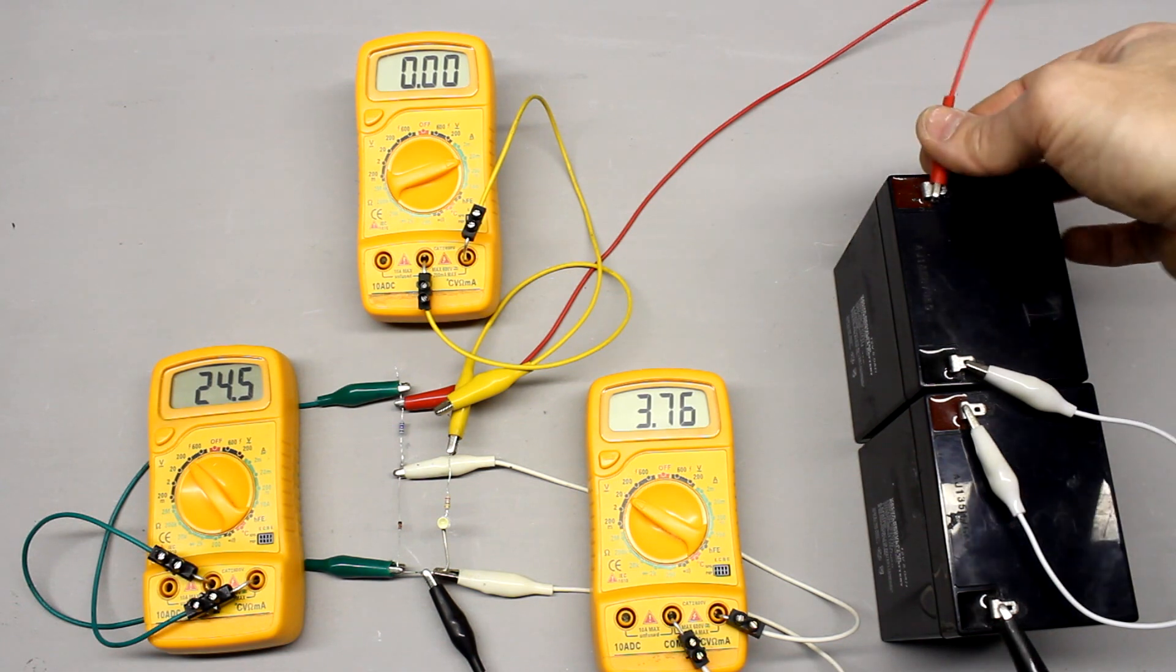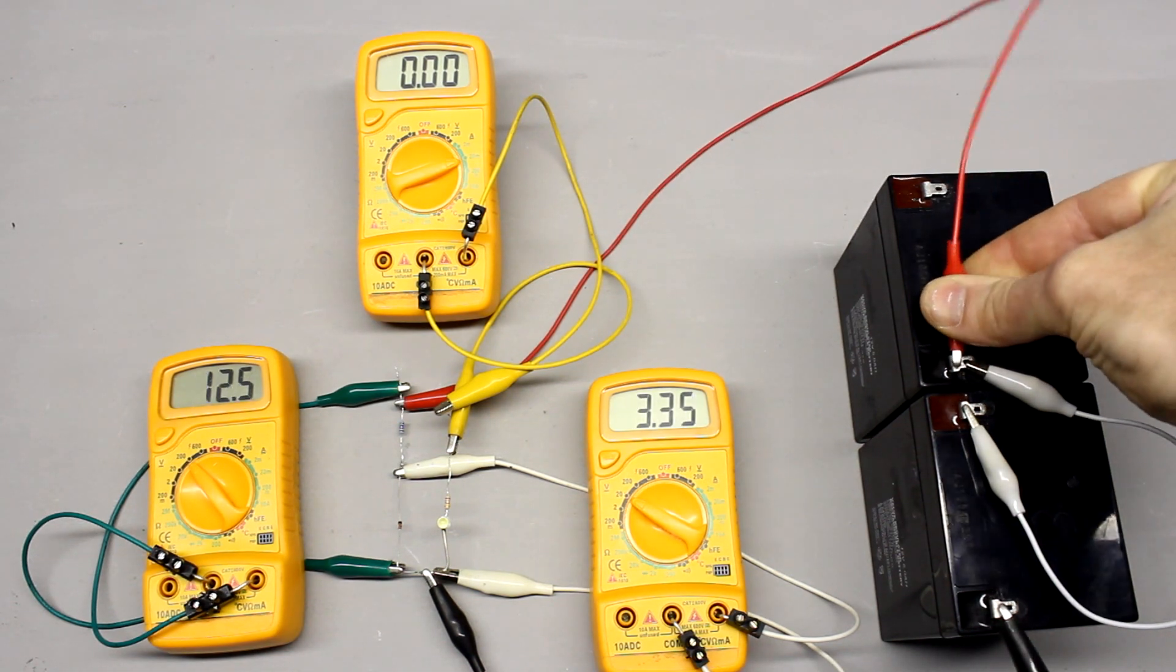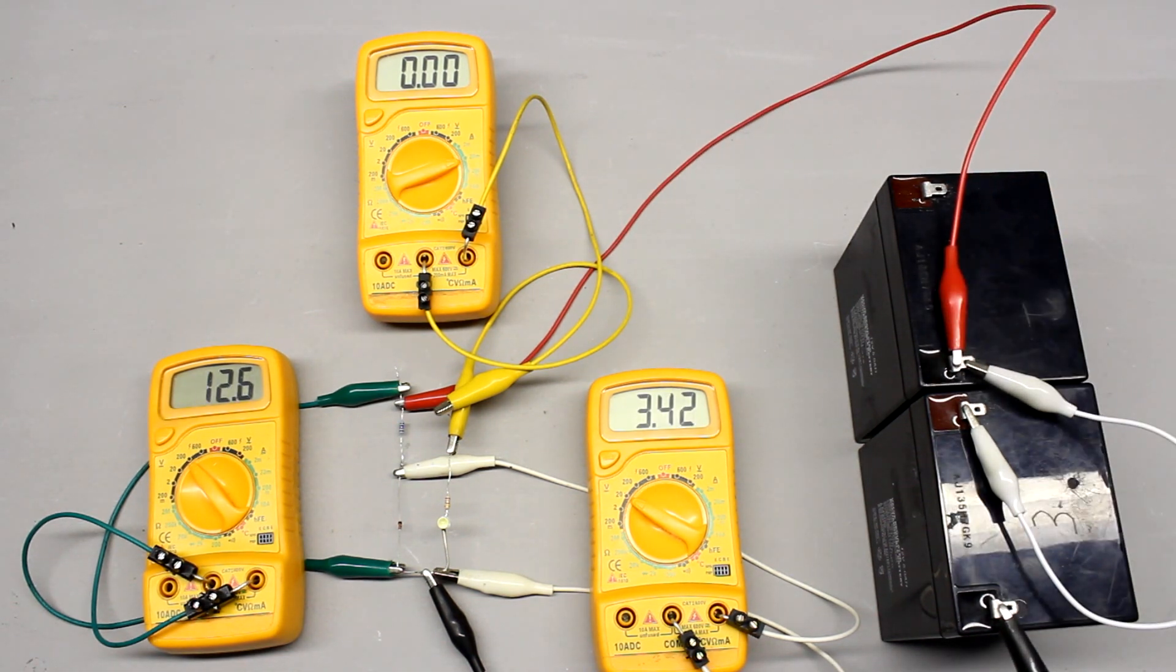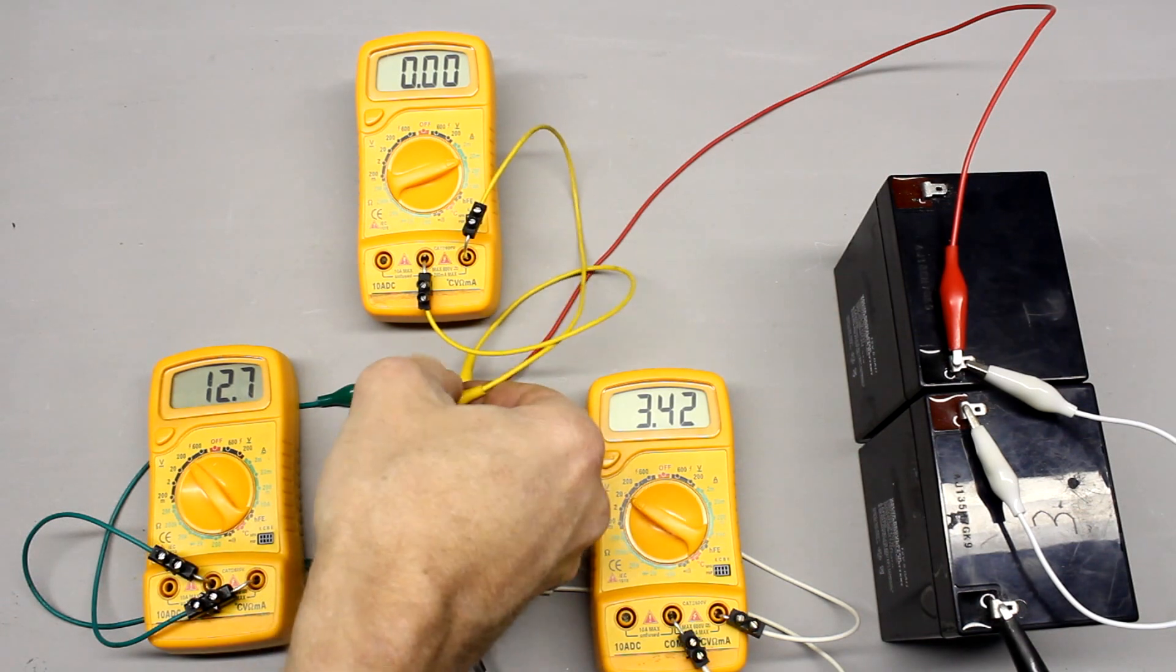When connecting a load in parallel to the Zener diode, almost no voltage shift can be observed, as long as the resistance value of the load doesn't fall below a certain value.